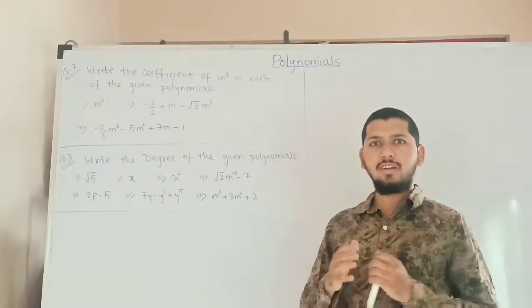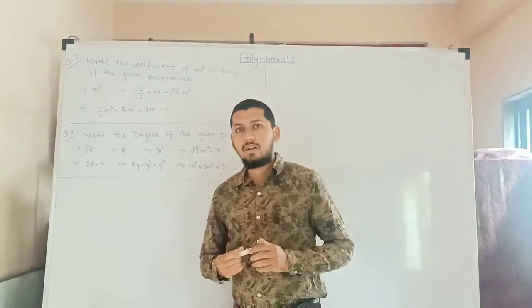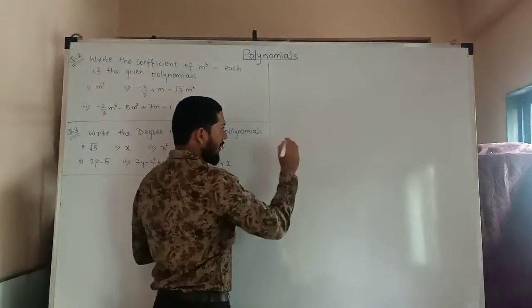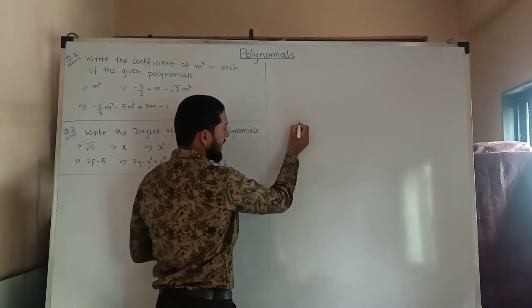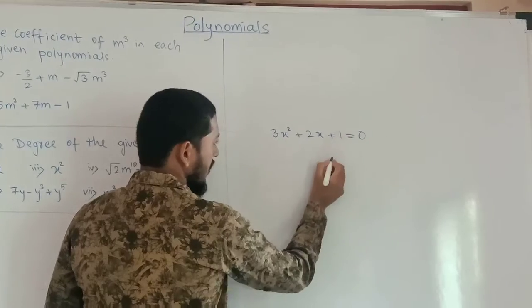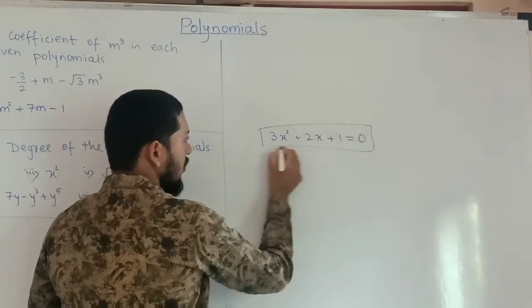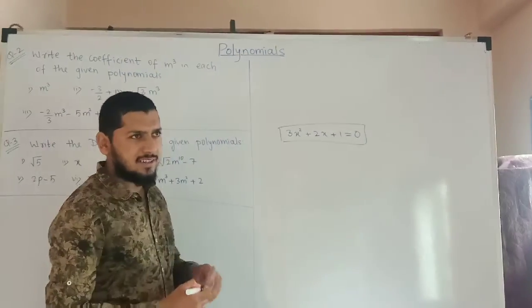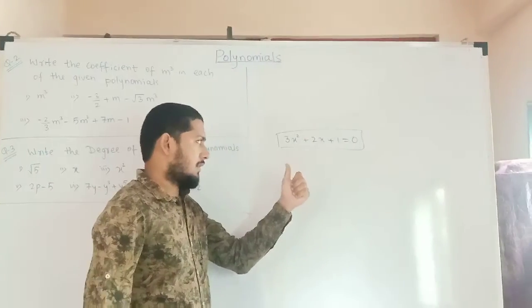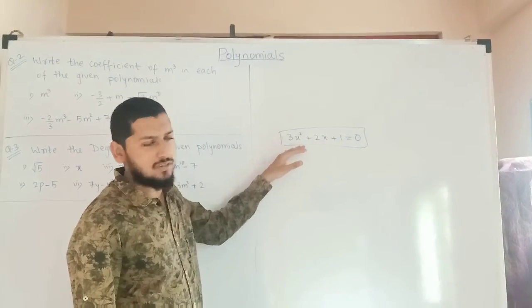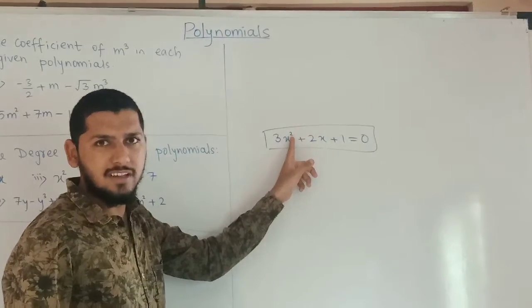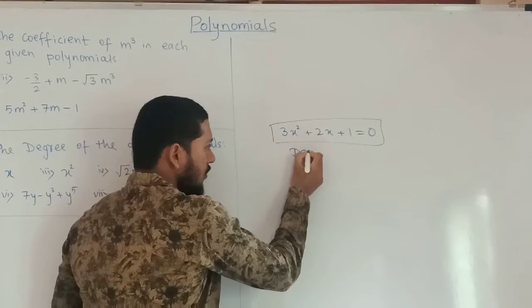First of all we need to understand what a coefficient is. A coefficient is nothing but the multiple of the number. Suppose I am writing a polynomial: 3x squared plus 2x plus 1 equals 0. This is an algebraic expression of degree 2. The degree is nothing but the highest power of that equation. In this equation the highest power is 2, so the degree of this equation is 2.